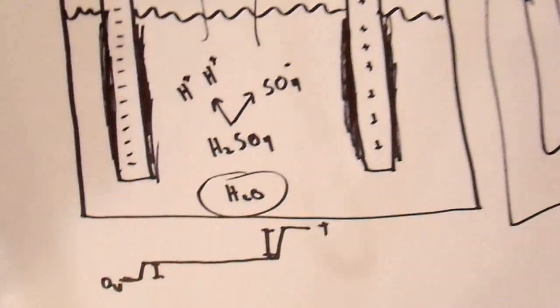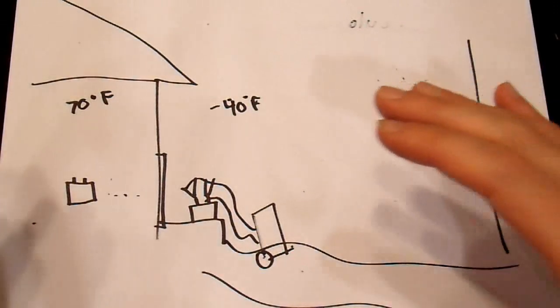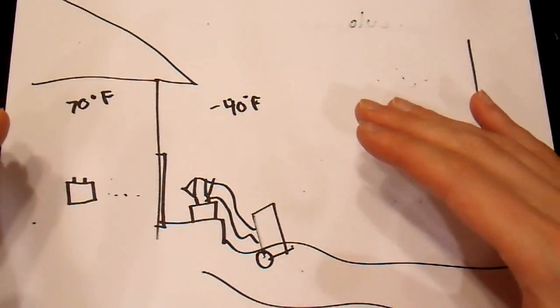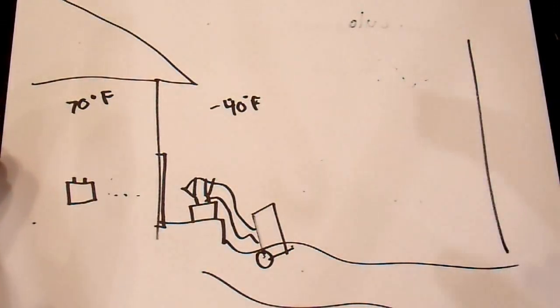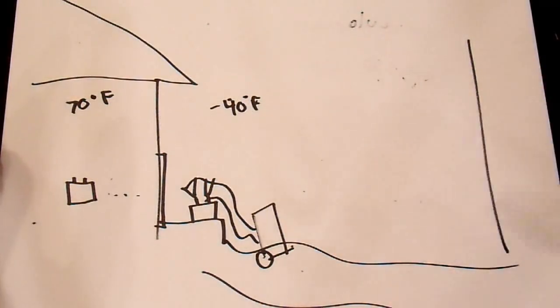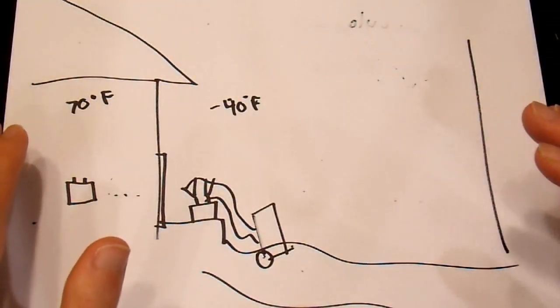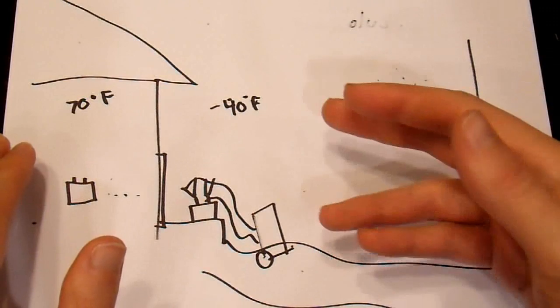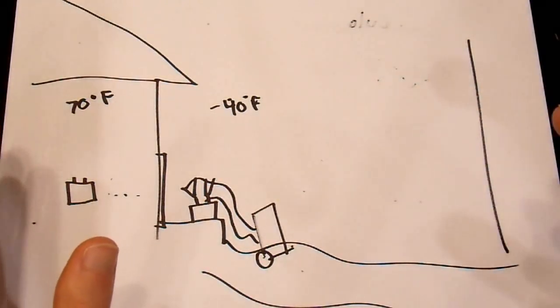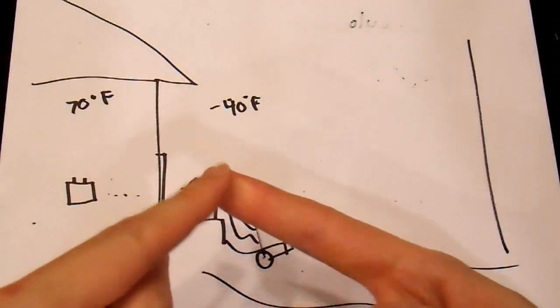So Peukert's equation does not state anything about the discharge rate versus the capacity. The way that it is generally used on the internet is entirely incorrect. Now it does have useful applications, and I may go into that in a later video, but I did want to state here in this video that for one, temperature does not affect the capacity of a battery,